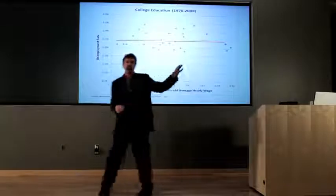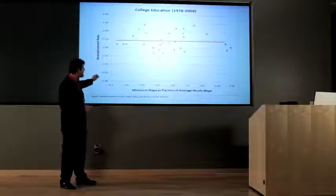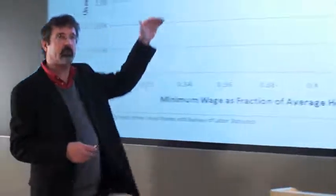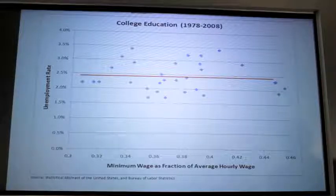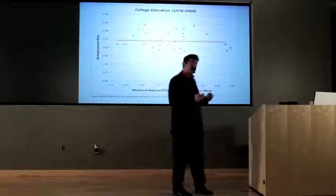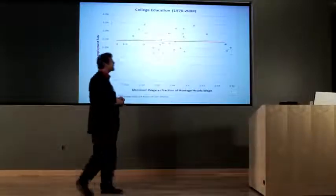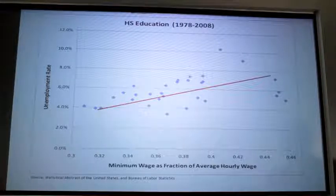Here you're looking at unemployment in the United States amongst college-educated workers. Every dot is a year, 1978 to 2008. The further to the right you go, the higher is the minimum wage. The further up you go, the greater the unemployment. What you can see is, amongst college-educated workers, there tends to be no relationship between unemployment and the minimum wage. But the college-educated workers are the high-skilled workers — these are not the ones you would expect to be excluded from the market by imposing a minimum wage. Here are high school-educated workers, and you start to see a positive relationship. On average, in years in which the minimum wage was higher, unemployment amongst high school-educated workers was higher also.